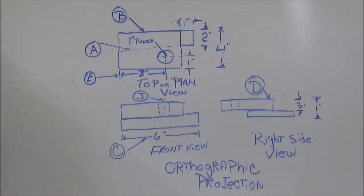Now, there's some notes on here, specifications. One inch punch. They want us to punch this hole, not drill it. We know that the overall size of the object is 4 inches by 6 inches. We know that this piece of material here is 2 inches.